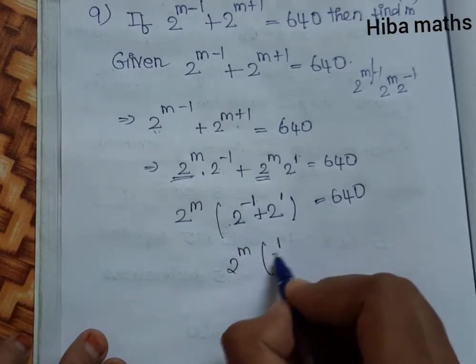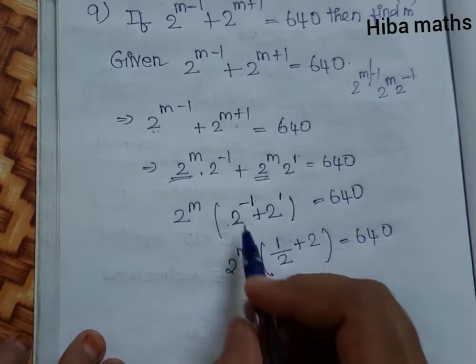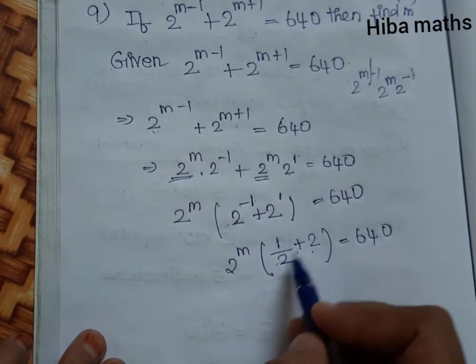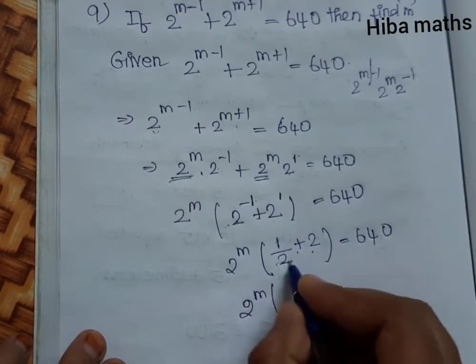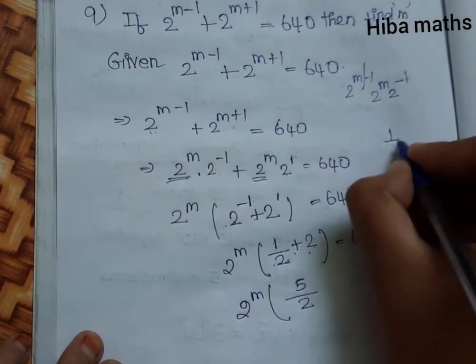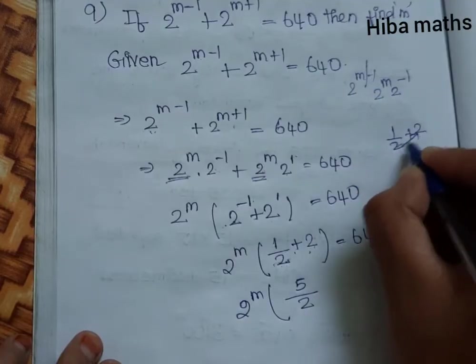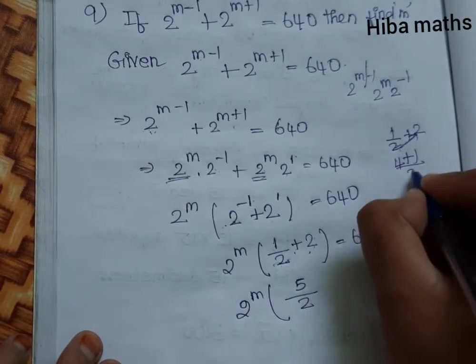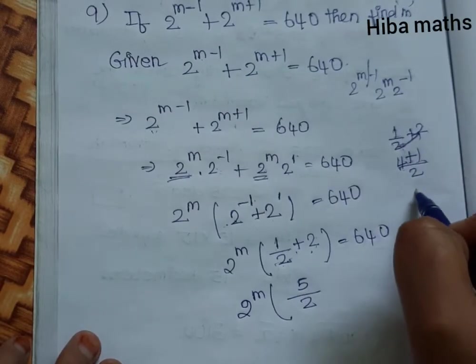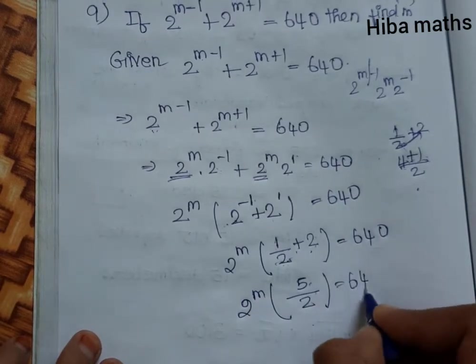Now, 2^(-1) equals 1/2, and 2^1 equals 2. So 1/2 plus 2 equals 5/2. The equation becomes 2^m × (5/2) = 640.